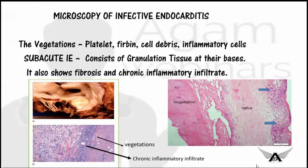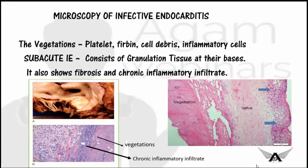When examining sub-acute infective endocarditis, we may also see granulation tissue, because the duration of disease is long and the infected area may begin to heal. The process of healing is indicated by granulation tissue in the microscopic features. We can also see fibrosis, calcification, and chronic inflammatory infiltrate due to the prolonged disease course.